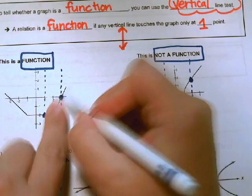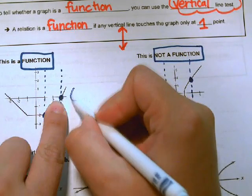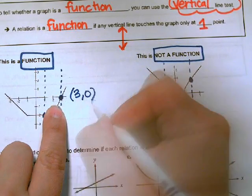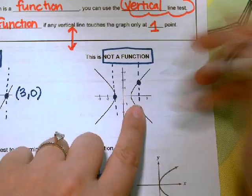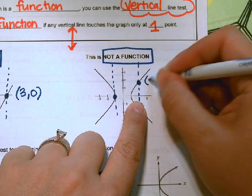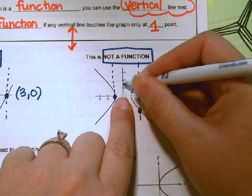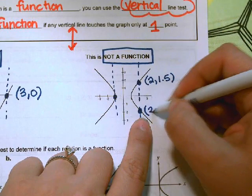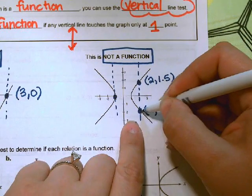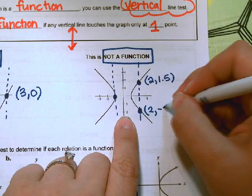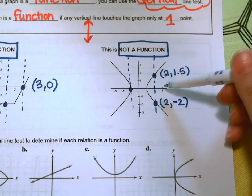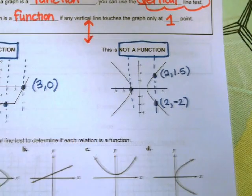For example, when x is 3, it only has one y value of 0. However, when x is 2, it has a y value of about 1.5, and also a y value of about negative 2. You can't have an x value with two different y values for it to be called a function.